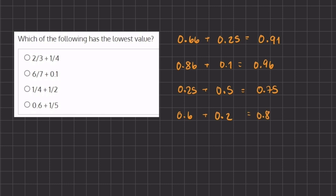Now if we want to take a look at which one has the lowest value, we can easily tell that 0.75 has the lowest value, and that corresponds with answer C, which is one-fourth plus one-half.